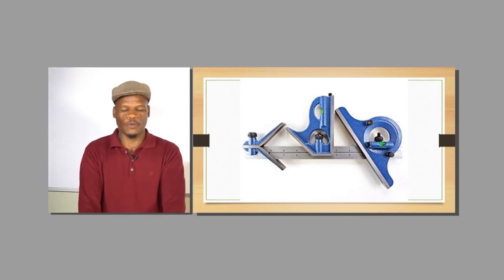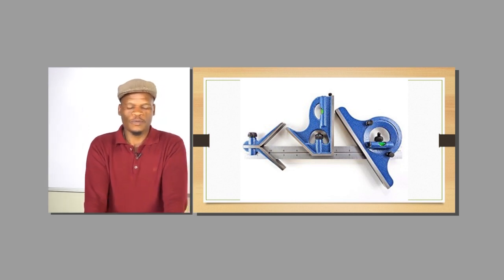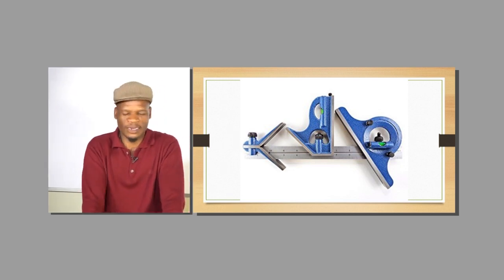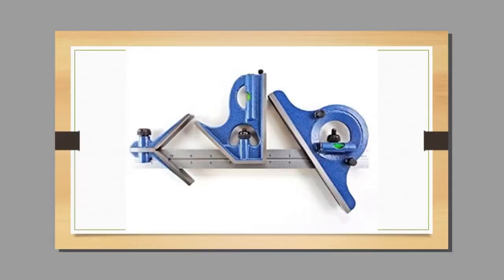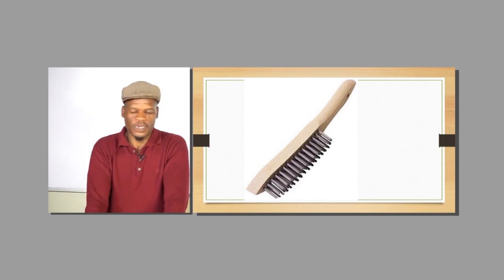You have got your combination square, which has different purposes. You can use it to measure or draw a straight line, measure an angle of 90 degrees, or measure different types of angles depending on which fitments you put into your ruler. You can also use the center finder attachment to find the center of a round object, which is very difficult for most people to identify.